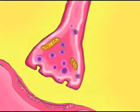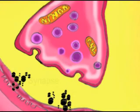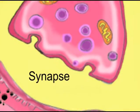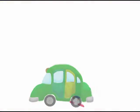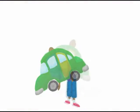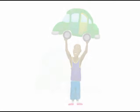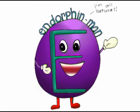Endorphins are neurotransmitters that travel across a junction of a nerve cell called the synapse and bind to receptors in the next neuron. When the endorphins are received, the pain signal is masked. This state is known as euphoria. Because of this, endorphins have been called natural pain relievers.